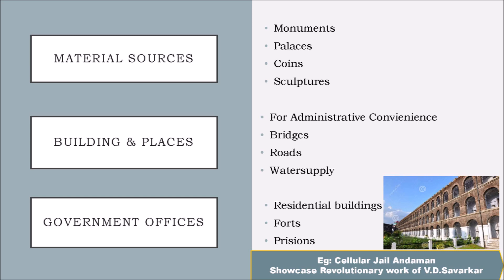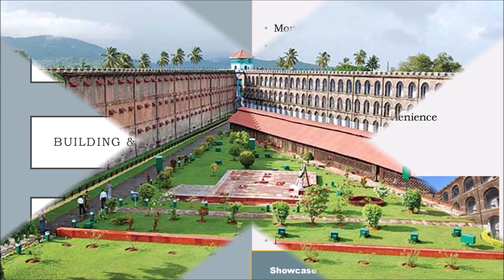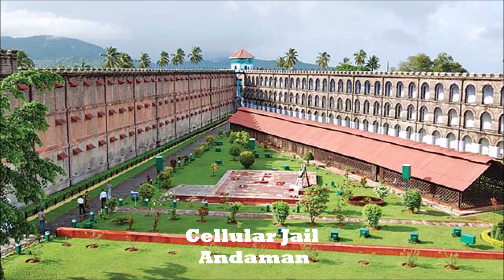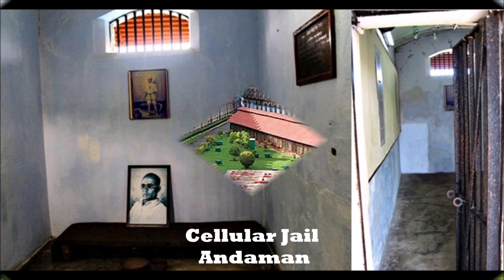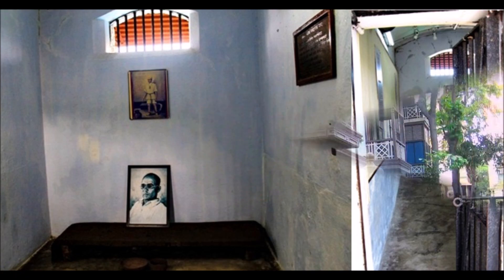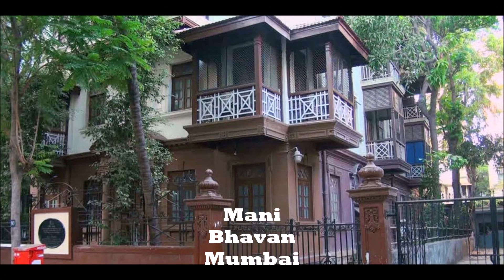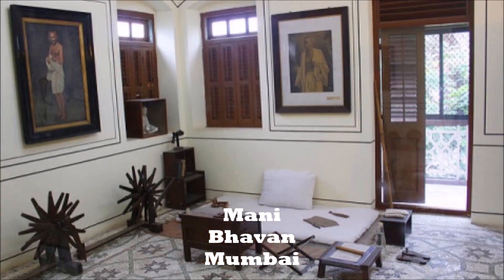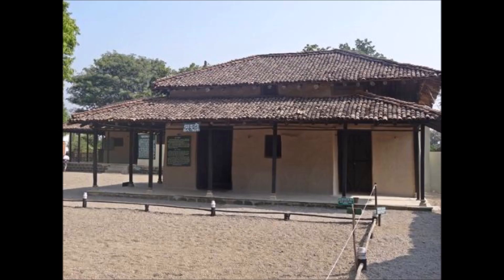Among these monuments, many buildings are intact even today, and some are declared as national monuments. For example, the Cellular Jail in Andaman, where you will get information about the revolutionary work of V.D. Savarkar. In Mumbai, Manibhavan is one such example, and in Wardha, Sevagram Ashram, where we get information of the Gandhian era.